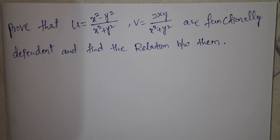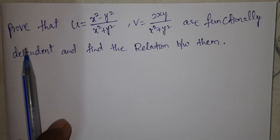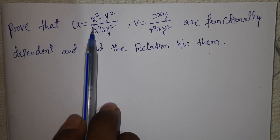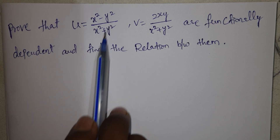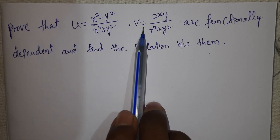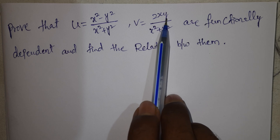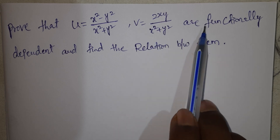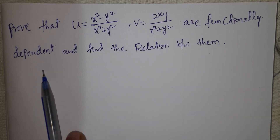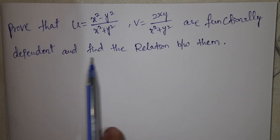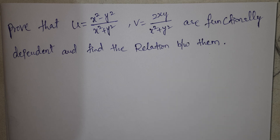Hi viewers and welcome to Rajesh Lekkalu. Today our topic is functionally dependent problem. This is very important. Prove that u = (x² - y²)/(x² + y²), v = 2xy/(x² + y²) are functionally dependent and find the relation between them.